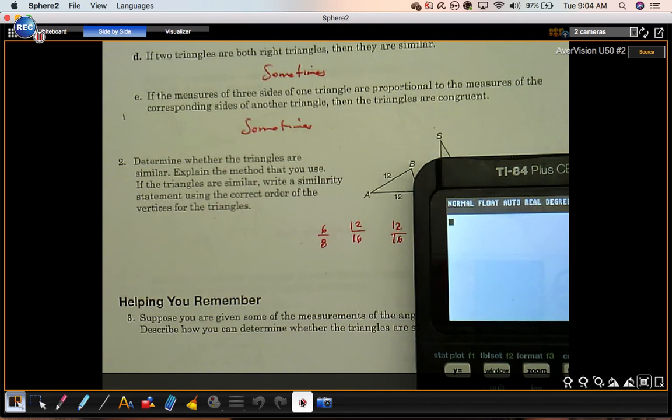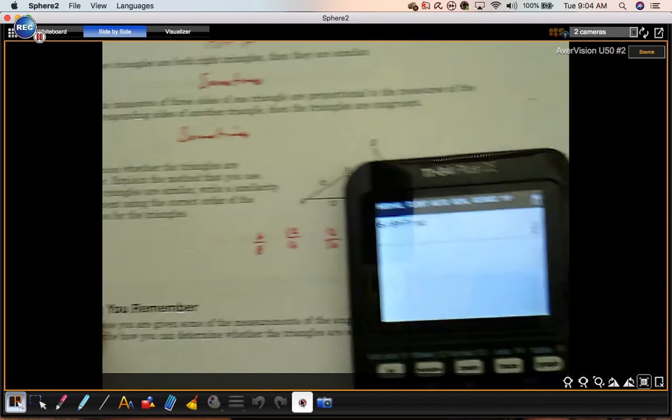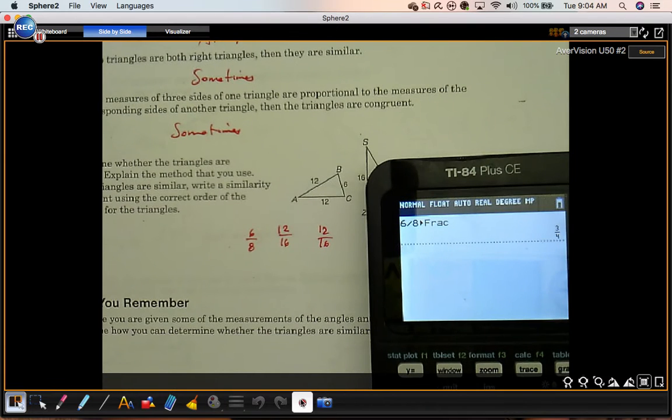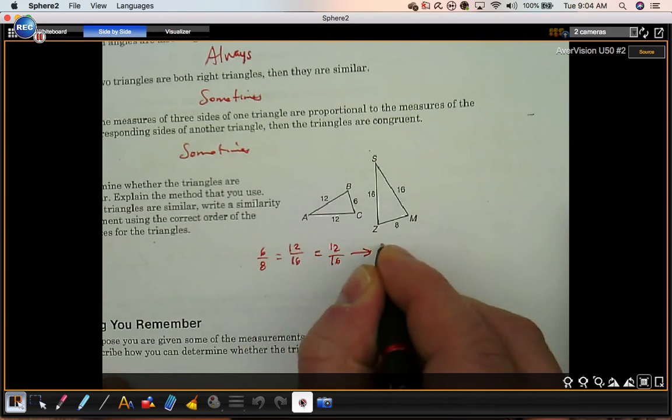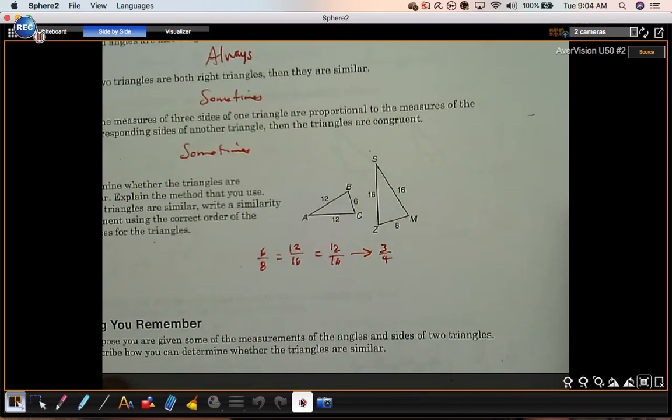What is 6 eighths reduced? It's 3 fourths. How about 12 sixteenths? It's 3 fourths as well. So these are all the same. They're 3 fourths. So they are similar.